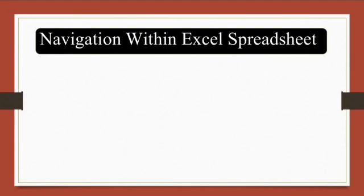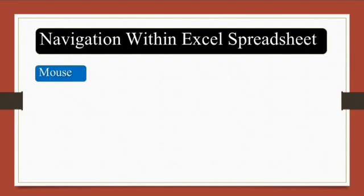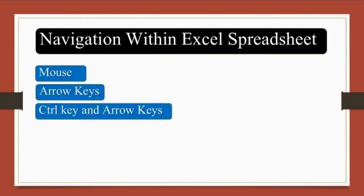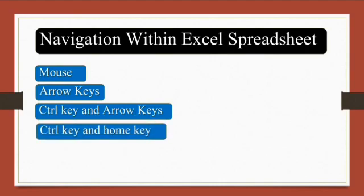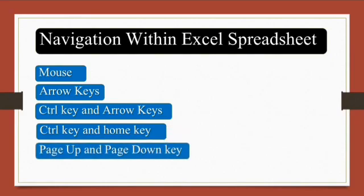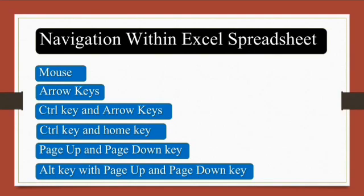We'll look at how you can navigate or move within your spreadsheet — from one cell to another, from one column to another column, and from one row to another row. There are several simple and easy ways: you can use your mouse, arrow keys, Ctrl key with arrow keys, Ctrl key with Home key, Page Up and Page Down keys, and Alt key with Page Up and Page Down.